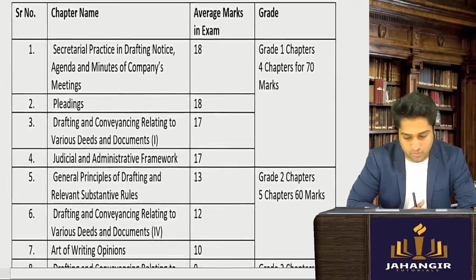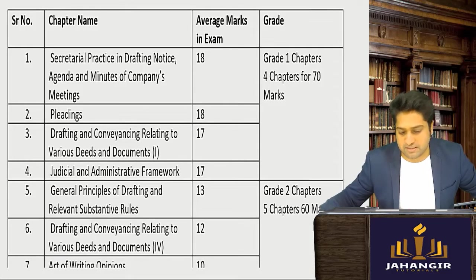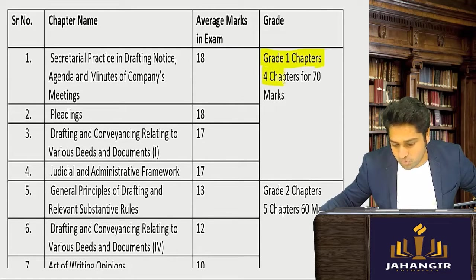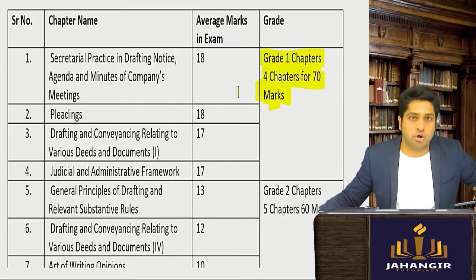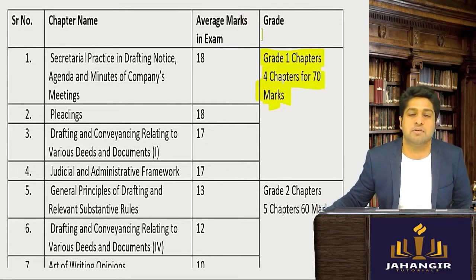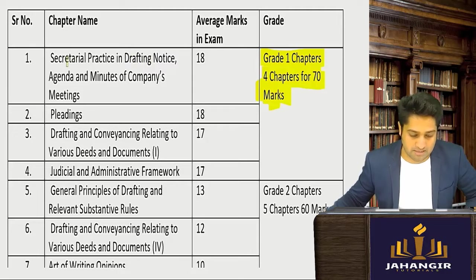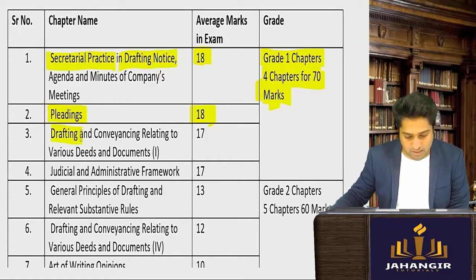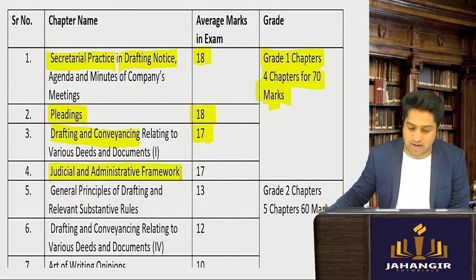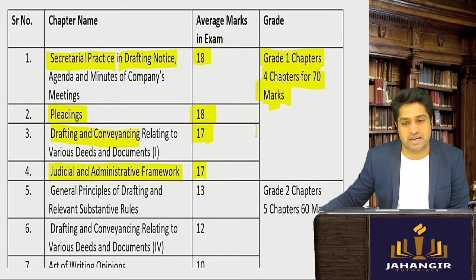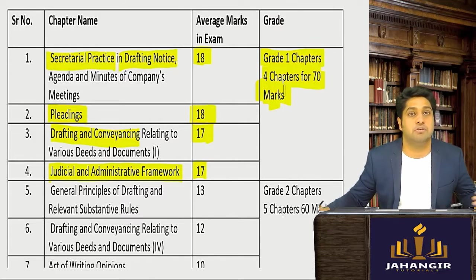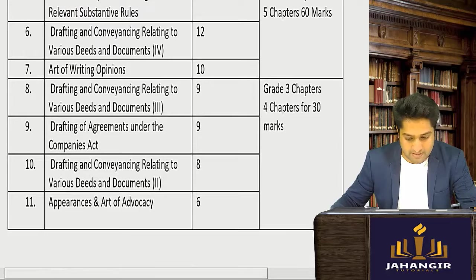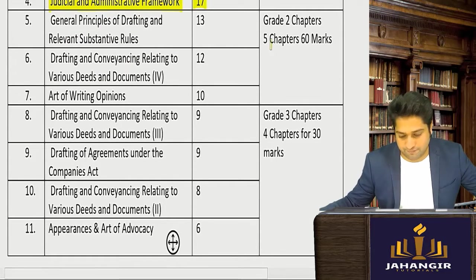In the grade one analysis of past exams, mostly they ask from all chapters, but some chapters carry heavy marks. Secretarial practice in drafting and notices — that's 18 marks. Pleadings is for 18 marks, drafting in conveyance is for 17 marks, and judicial and administrative framework is for 17 marks. These four chapters together come for around 70 marks in your paper.